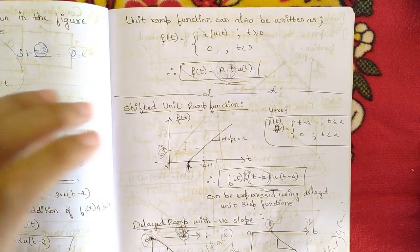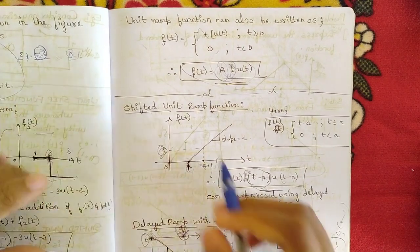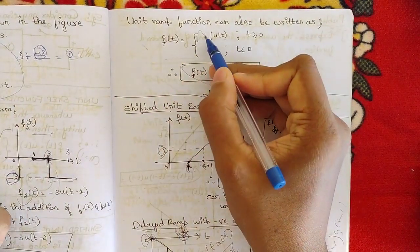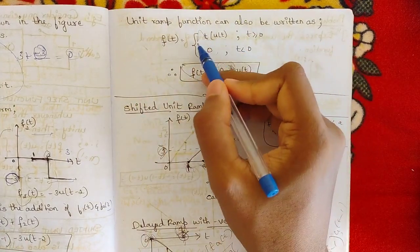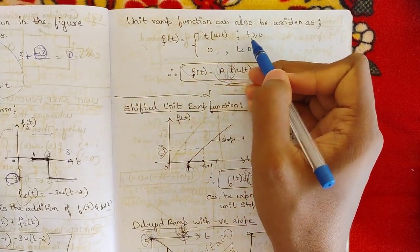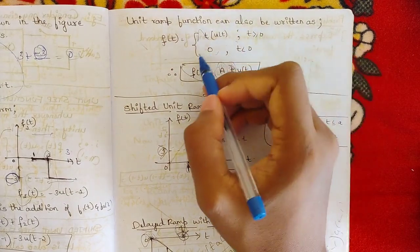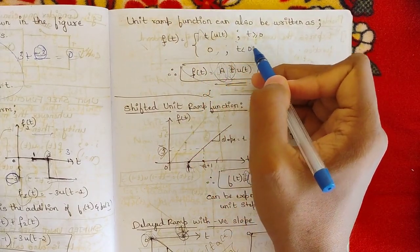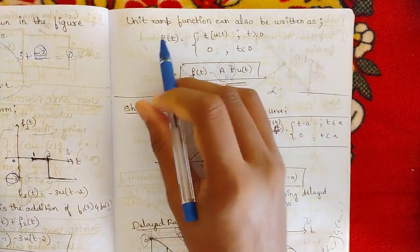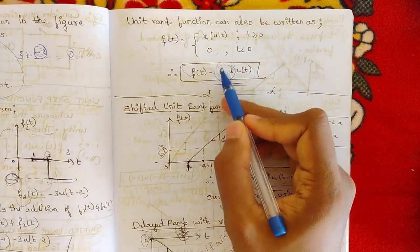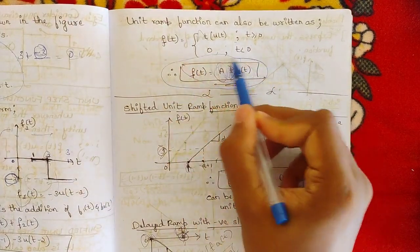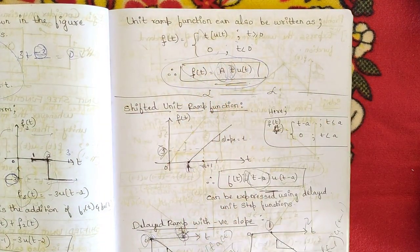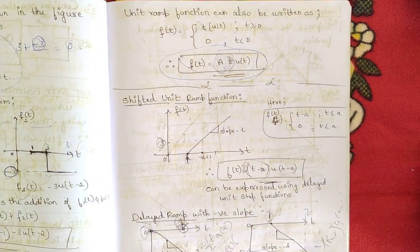The unit ramp function can also be written as f(t) = t·u(t), since u(t) is zero for t < 0 and one for t ≥ 0. Therefore, the general equation to represent a ramp function is f(t) = a·t·u(t). This general equation is important to remember.